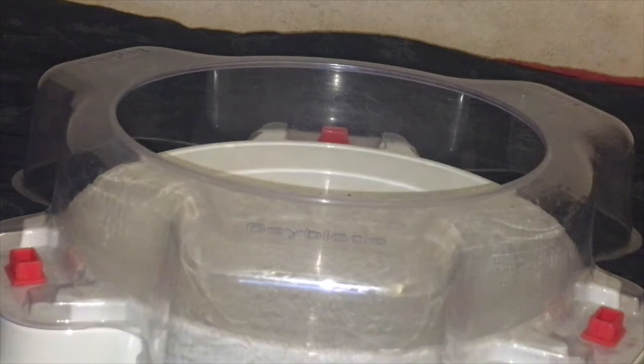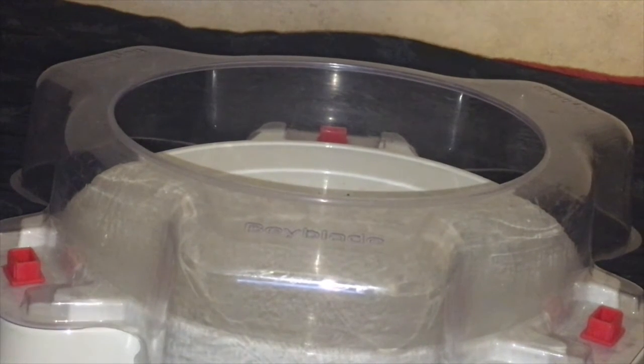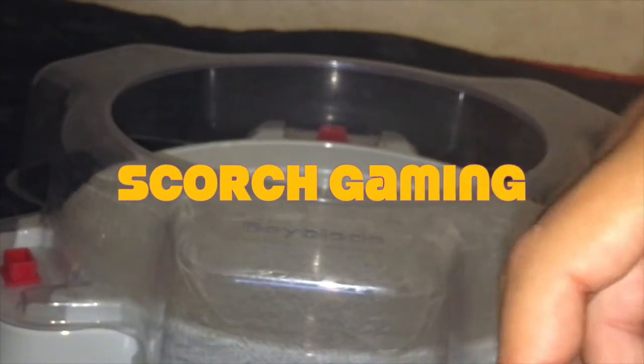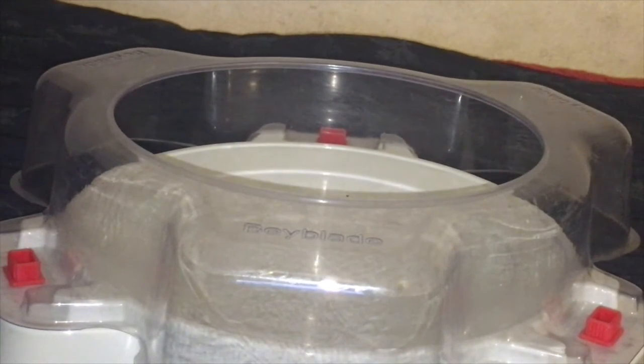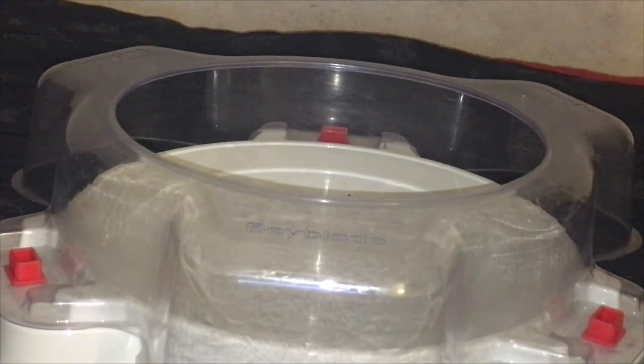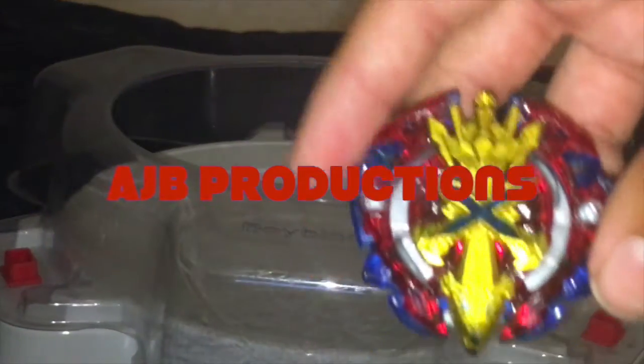For next round we have Scorch Gaming's combo, Ryzen Vertical Press. And you might know this combo from the last round. It was Clary at people, but he wanted to change his name to Scorch Gaming because that was his main account. And then we have him versus AJB Productions combo, Xenoscalibur Heavy Impact. A good combo but not a lot of stamina. But let's go to the next round.